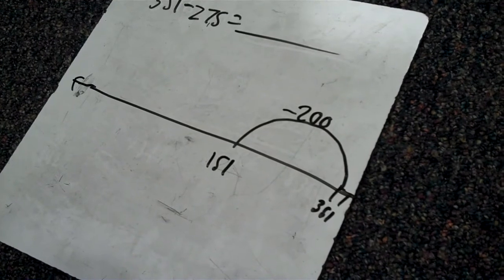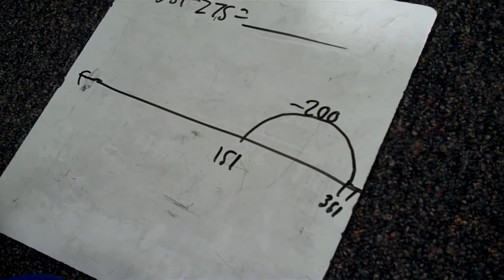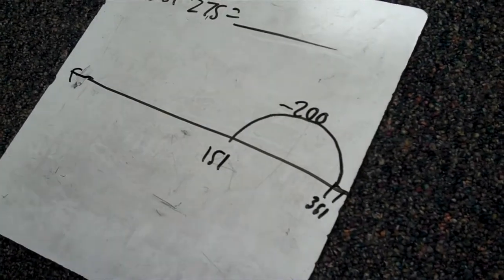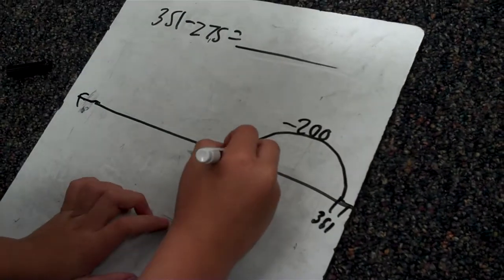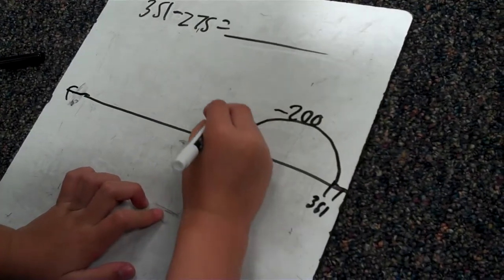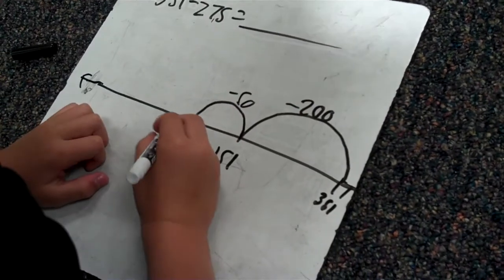So it can break down 70 to 5. Mm-hmm. Like 50. So I'm just going to break down 50 from it. Okay. I like that strategy. Minus 50. That makes it really easy. Equals 101. Mm-hmm.